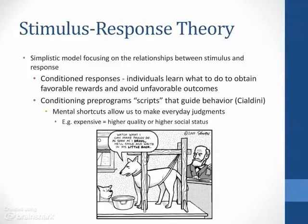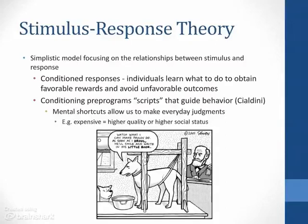Cialdini expanded on this notion by arguing that conditioning pre-programs scripts that guide our behavior. These scripts are mental shortcuts that allow us to make everyday judgments without spending a lot of energy or mental capacity on them. An example of a script might be that if a product is expensive, we may assume that it must be a higher quality or confer a higher social status than a similar product offered at a lower price. In stimulus-response theory, we assume that attitudes that are rewarded grow stronger and those that are opposed become subject to change. Advertising uses stimulus-response in messages that link positive outcomes with specific products.